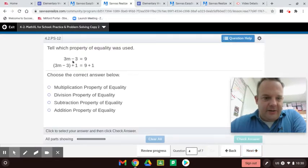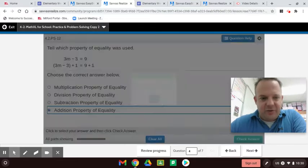All right, here, you have this equation here. 3m minus three equals nine. If you add one on the left side, you have to add one on the right side. That's called the addition property of equality.